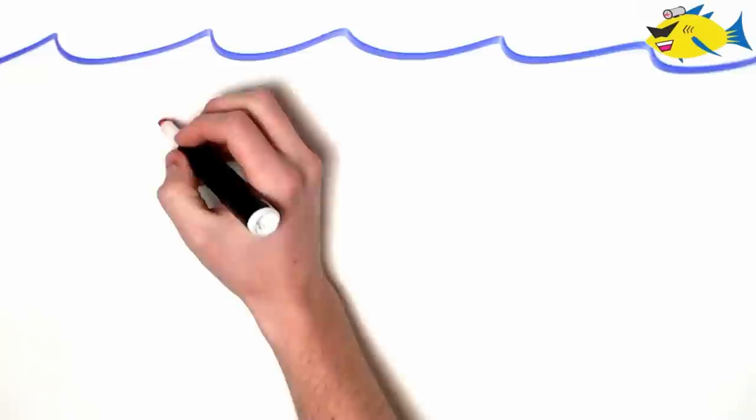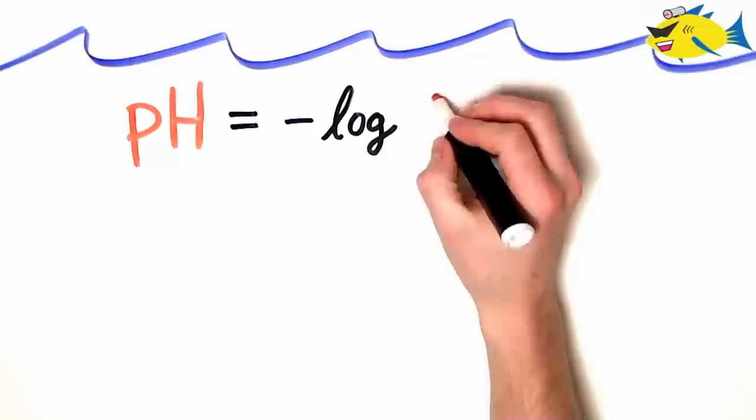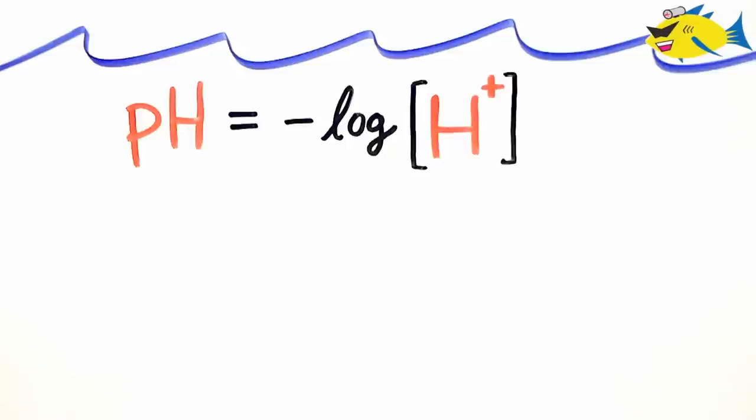We'll start by discussing pH. The pH is determined by taking the negative log of the hydronium ion concentration of a given solution. This is essentially the same as saying it's the negative log of the hydrogen ion concentration, and we'll continue to describe it that way since most people have been taught it that way.